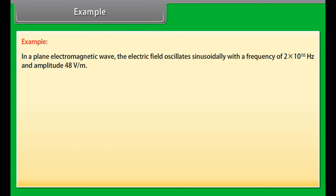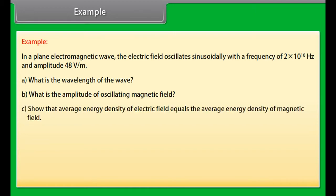Example. Let's take an example of electromagnetic waves. In a plane electromagnetic wave the electric field oscillates sinusoidally with a frequency of 2 into 10 raised to the power 10 Hertz and amplitude 48 volt per meter. What is the wavelength of the wave? What is the amplitude of oscillating magnetic field? Show that average energy density of electric field equals the average energy density of magnetic field.